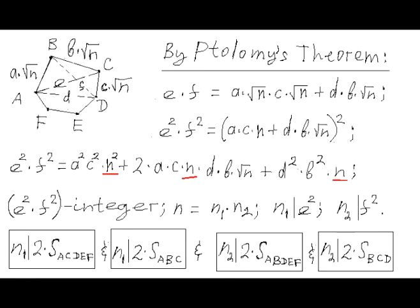Such that n1 times n2 equals n, and e squared is divisible by n1, for example, and f squared is divisible by n2.